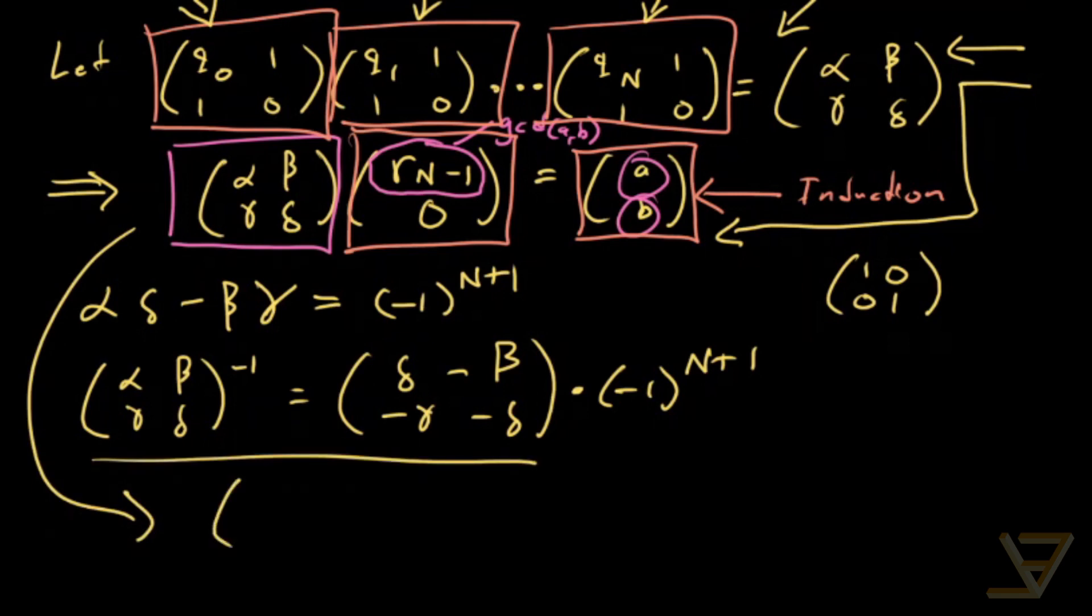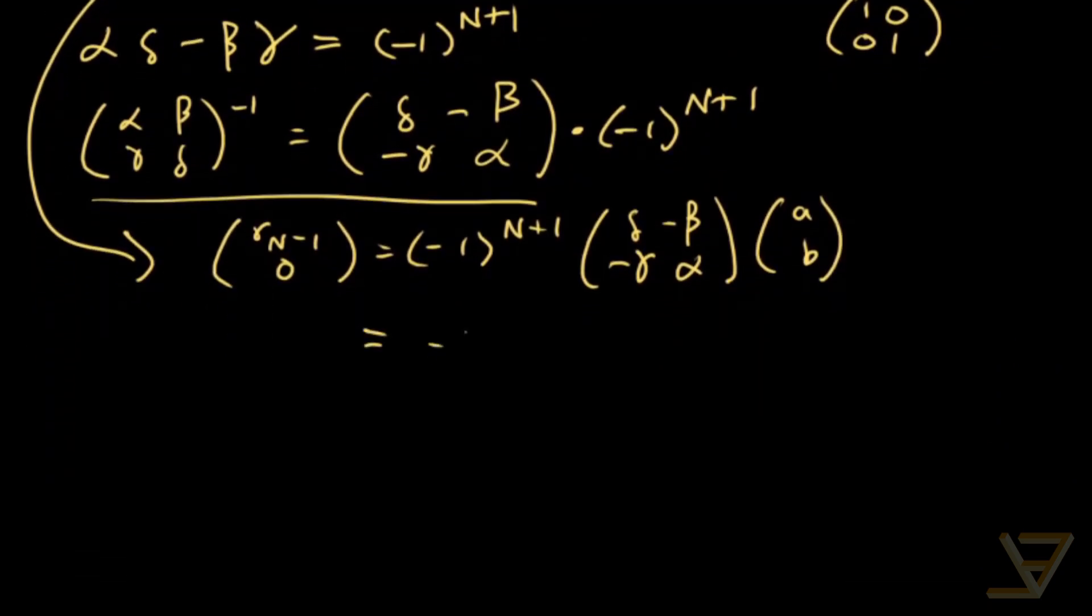So, what that tells us then is that we can take this equation, multiply both sides by this inverse, and we get that [r(n-1), 0] is equal to negative one to the n plus one times [[delta, -beta], [-gamma, alpha]] times [a, b]. And that is equal to [(-1)^(n+1) times (delta*a - beta*b), (-1)^(n+1) times (-gamma*a + alpha*b)]. And the lower entry doesn't really matter, but we'll compute it anyway.